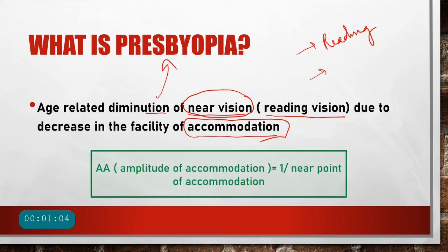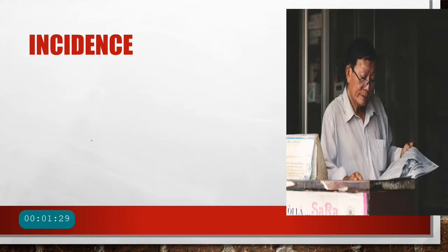The amplitude of accommodation, represented by the symbol AA, is equal to 1 divided by the near point of accommodation. The point which is nearest to the eye at which an object can be accurately focused on the retina with full accommodation is called the near point, or the punctum proxima.